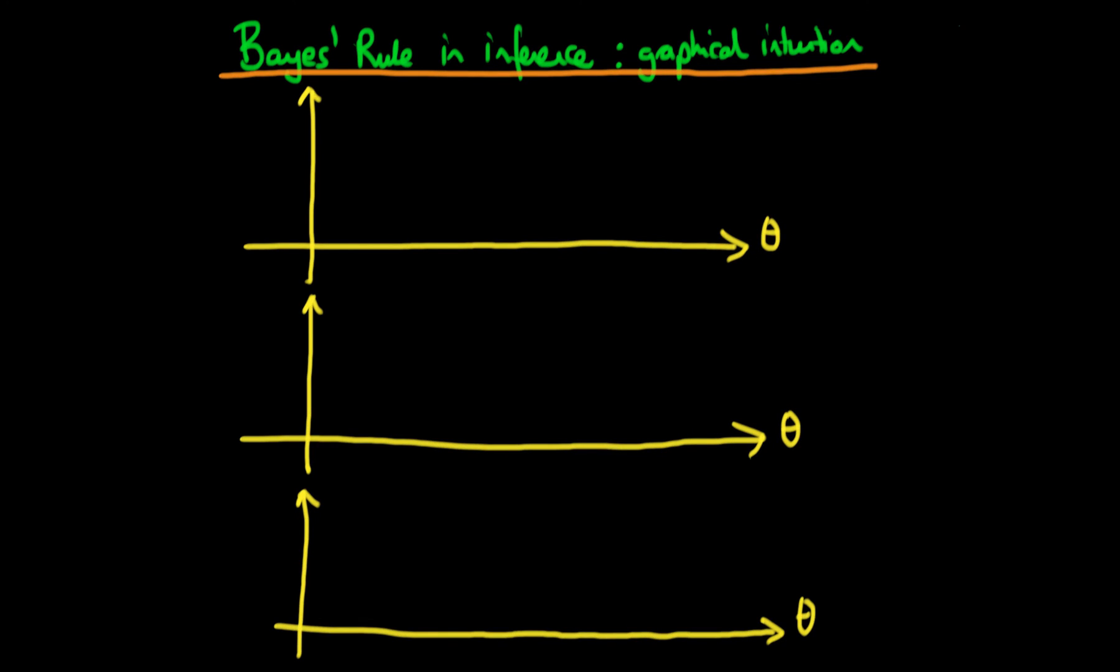In this video I want to describe how we can use graphical intuition to understand the results of Bayesian inference, in other words how we can understand Bayesian posterior probabilities in a slightly better manner.